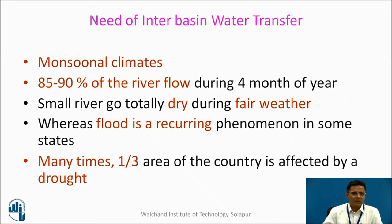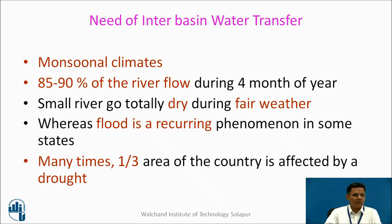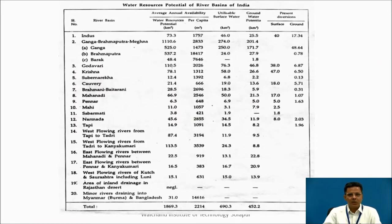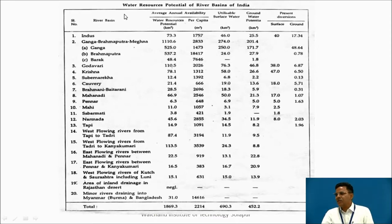What is the need of interbasin water transfer in India? India has monsoon type climate. 85–90% of river flow occurs in just monsoon months, June to September. Small rivers almost go dry after monsoon, whereas flood is a recurring phenomenon in some states of North East India and North India. Many times one-third of the country is affected by drought in a particular year.